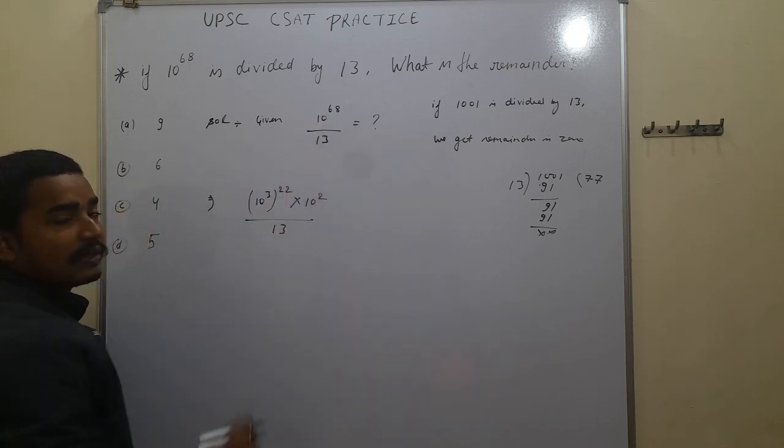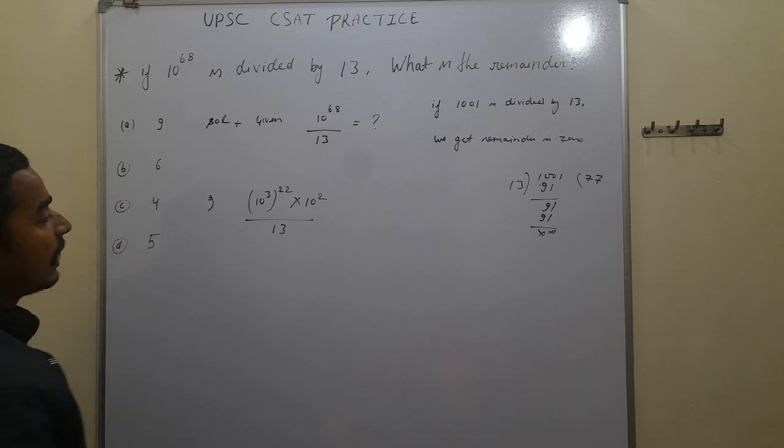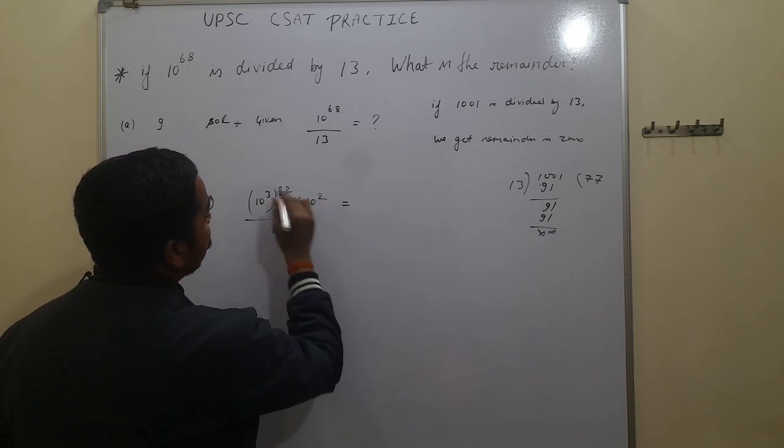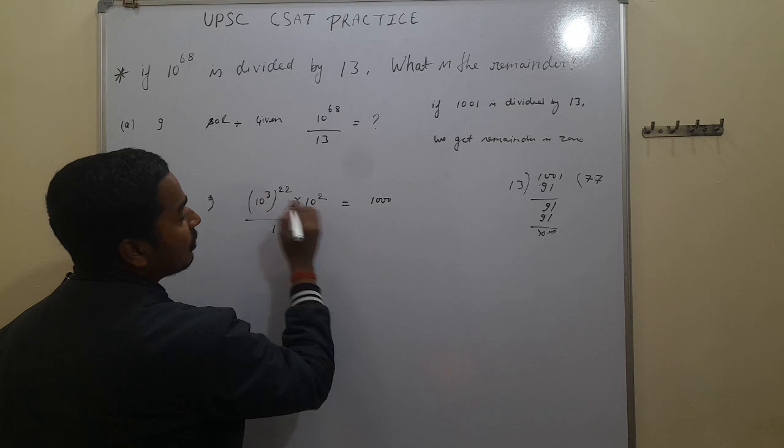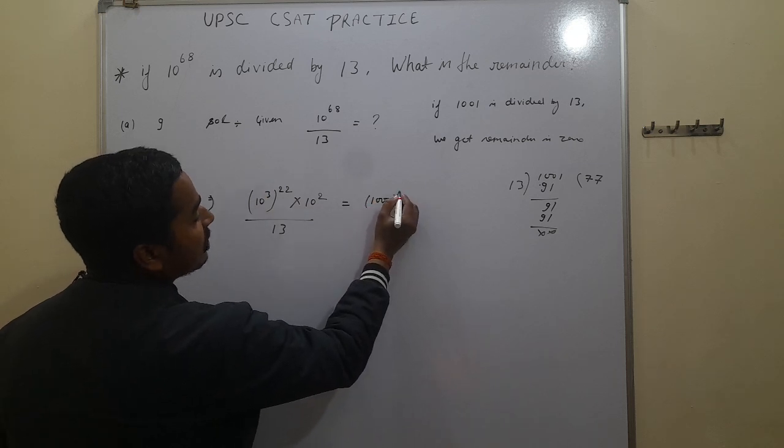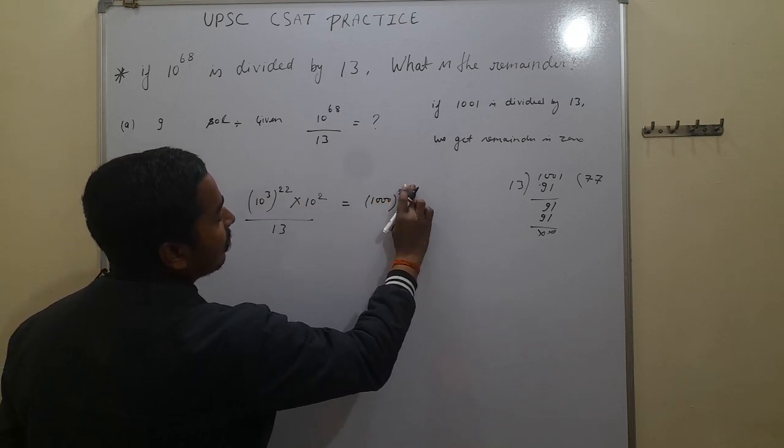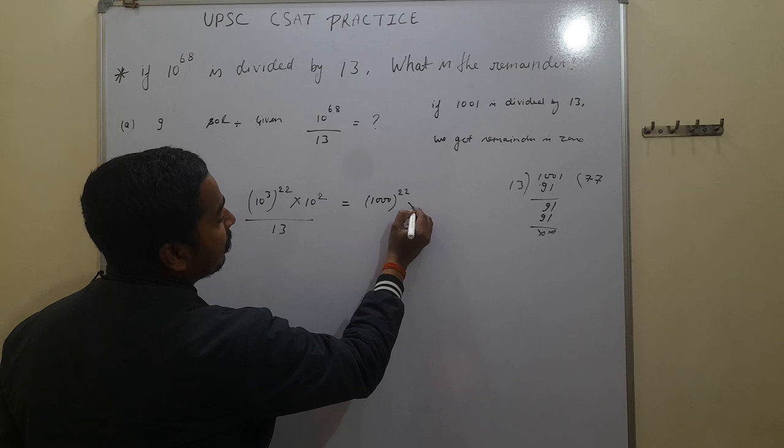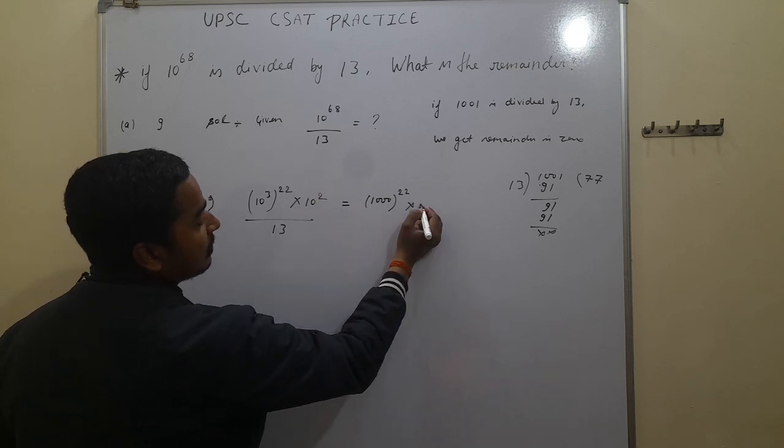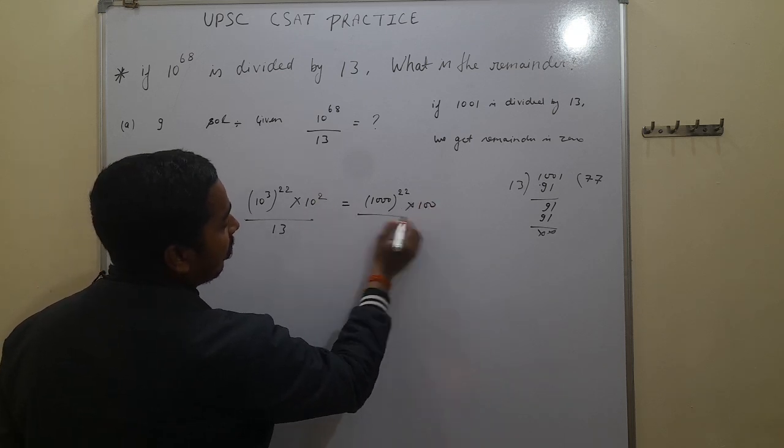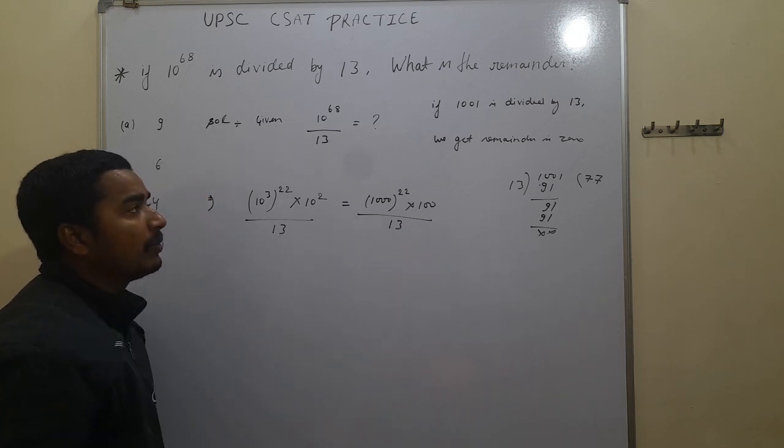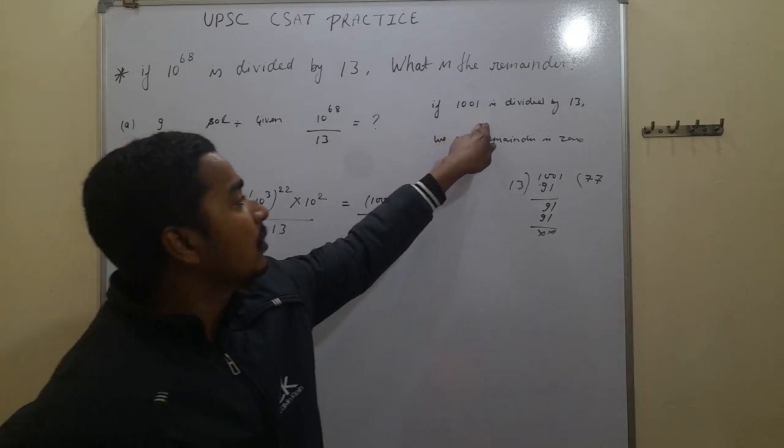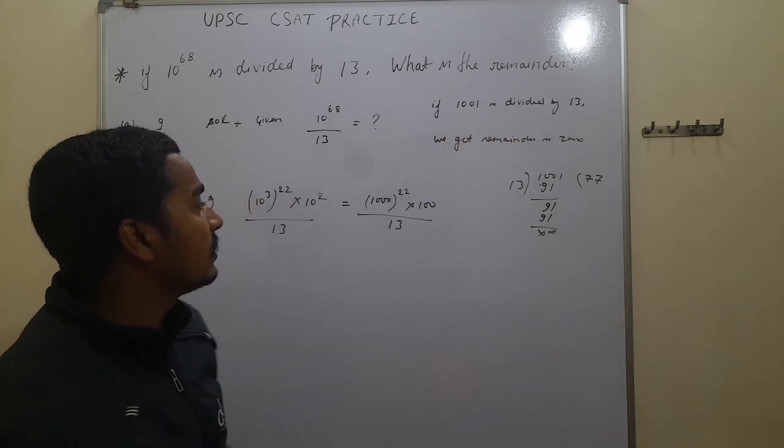We get again 10 to the power of 68. Similarly, we can also write here this gives 1000. 10 to the power of 3, this power of 22, into 10 to the power is 2, this is written as 100 upon 13. When we divide 1001 with 13, we get remainder is 0.